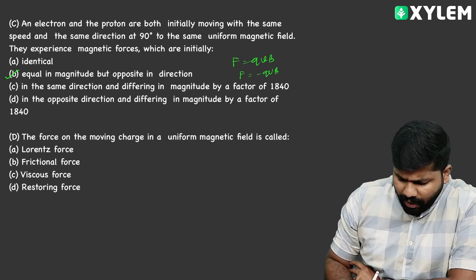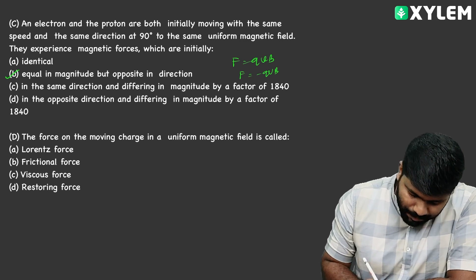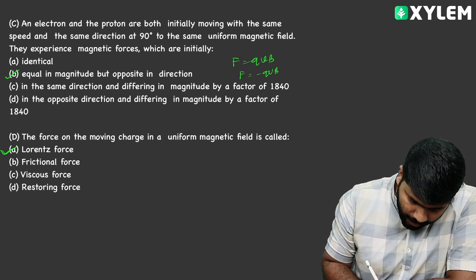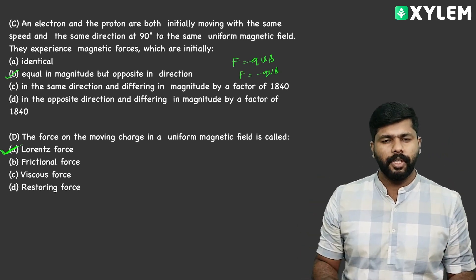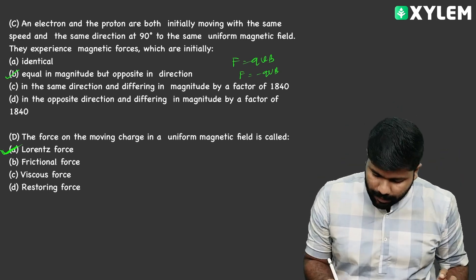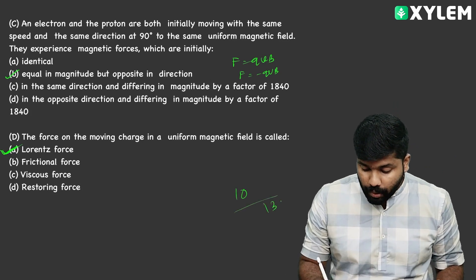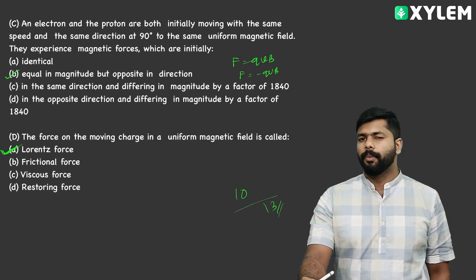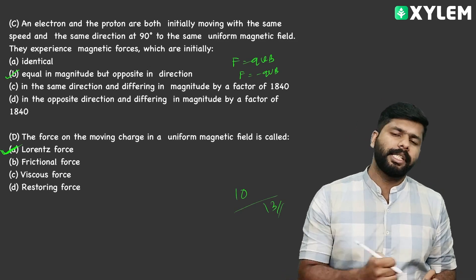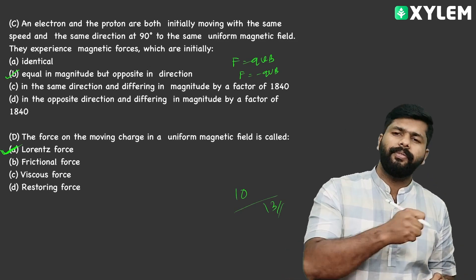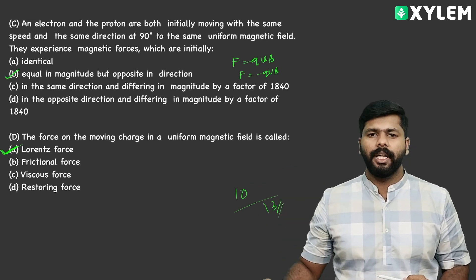The force on a moving charge in a uniform magnetic field is called the Lorentz force. We have completed 10 questions — actually 13 questions total, with 4 case study options. If you have any questions, put them in the comment box. See you in the next video. Bye.